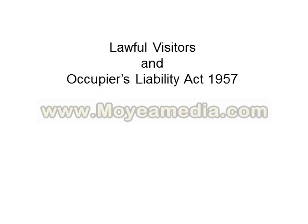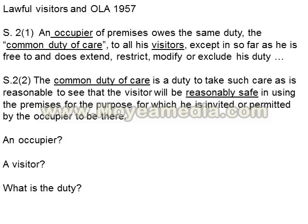Turning first to lawful visitors and the 1957 Occupiers' Liability Act. This is an Act of Parliament, so you need to get the Acts and read them. The good news is the 1957 Act is very short — it runs to about a page — and it's written in a very clear way. The 1984 Act is a little longer, just a couple of pages with gaps between sections, but still very clear legislation.